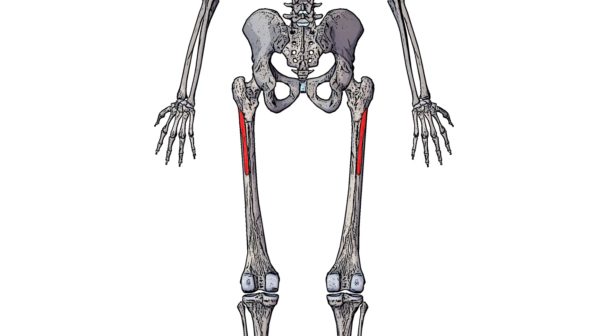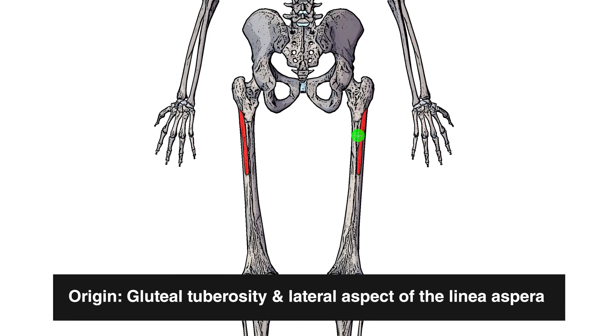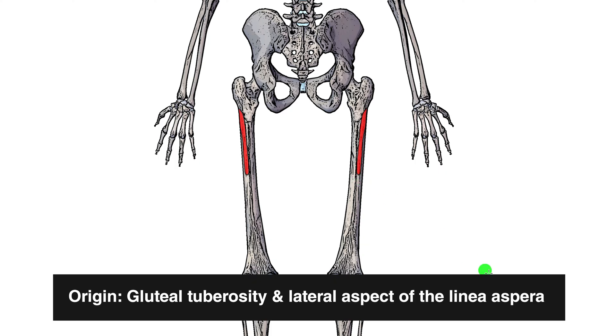Swapping to a posterior view, you can see the remainder of the origin, and that's going to be on the gluteal tuberosity and the lateral aspect of the linea aspera.